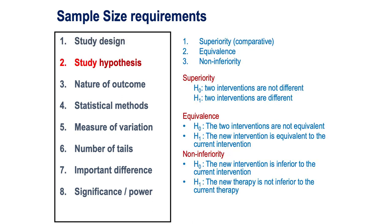The second requirement is the study hypothesis. The traditional study hypothesis is superiority, where we think one treatment group is going to be better than the other. But there could be others. The equivalence hypothesis is where we think the intervention group is not going to be better or worse than the control — this uses two one-sided hypothesis tests. And the third is non-inferiority, where we think the intervention will be non-inferior to the current therapy.